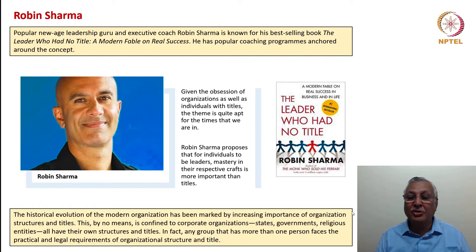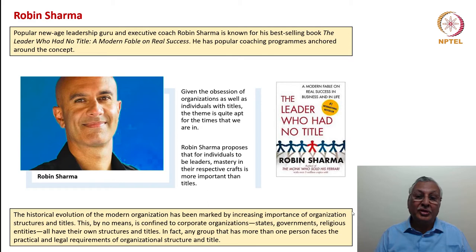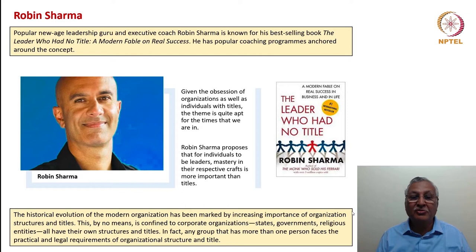Robin Sharma proposes that for individuals to be leaders, mastery in their respective crafts is more important than titles — that is the essence of this book. We have to recognize that any organization will and must have titles; states, governments, and religious entities have titles as much as corporate organizations, whether public or private sector. But it is the mindless seeking of titles without concern for craftsmanship, mastery, or competence that people should avoid.